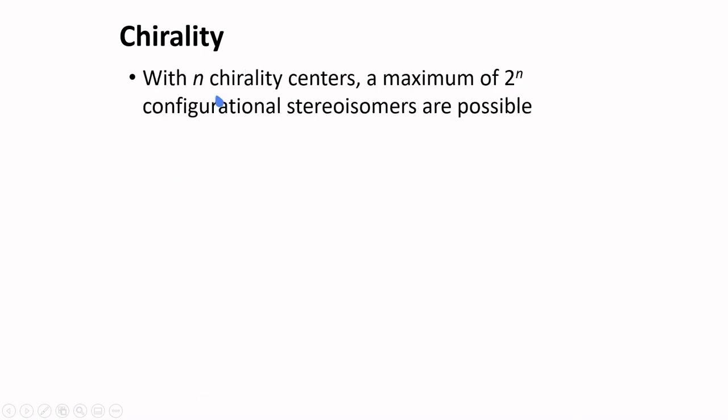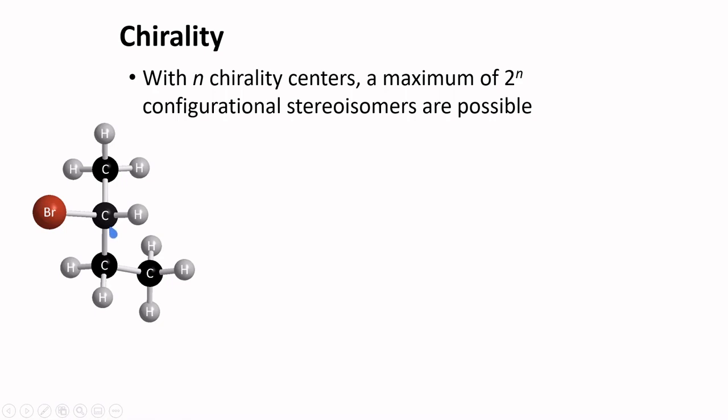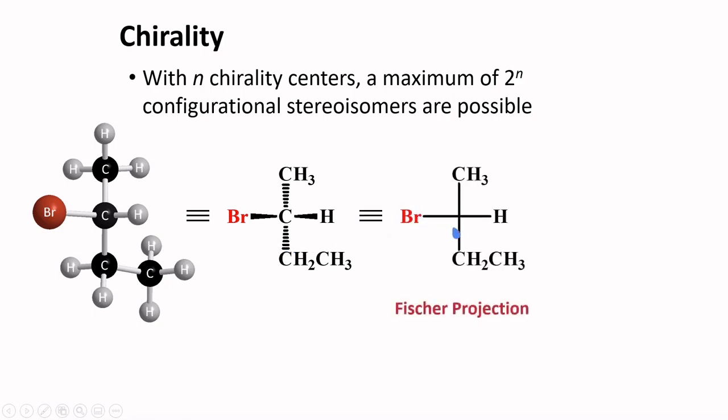With a certain number of chirality centers found in a molecule, a maximum of 2 raised to n configurational stereoisomers are possible. Taking for example this stereoisomer of 2-bromobutane, it is common to project this molecule in this way. This arrangement is used to make a Fischer projection, named after Emil Fischer, who introduced this concept.